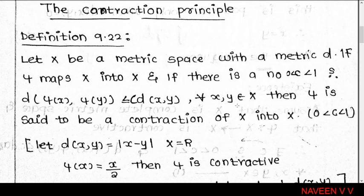For all x, y belonging to X. Here c is chosen from the open interval (0,1). If we can find such a c satisfying the condition d(φ(x), φ(y)) ≤ c · d(x,y) for all x, y in X, then φ is called a contraction of X into X, or equivalently, φ is a contractive map.